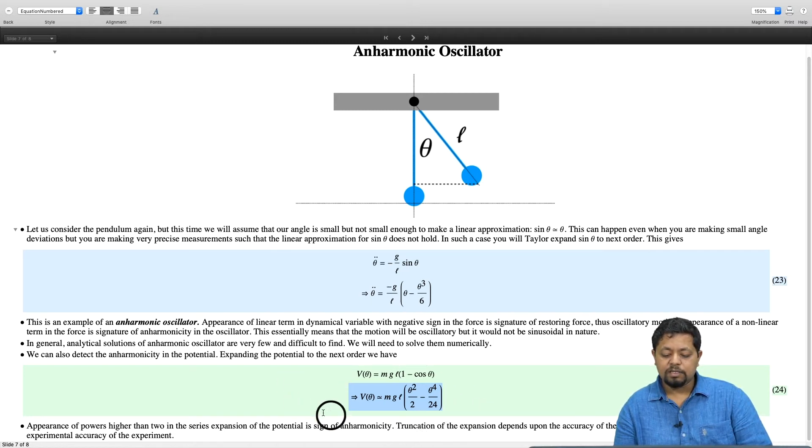Now, that potential is an anharmonic potential because it is not quadratic anymore. This is theta to the power 4 by 24 correction and therefore this is anharmonic.